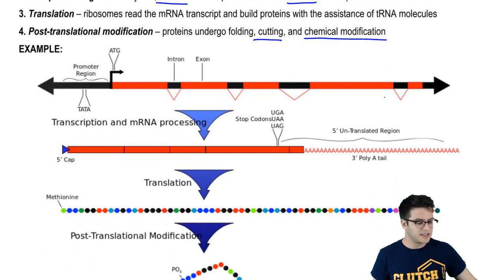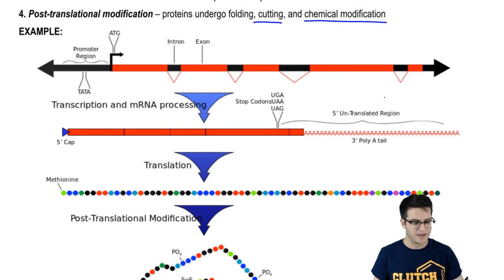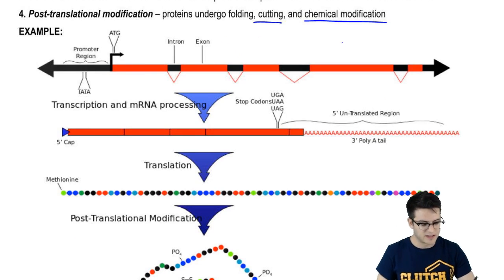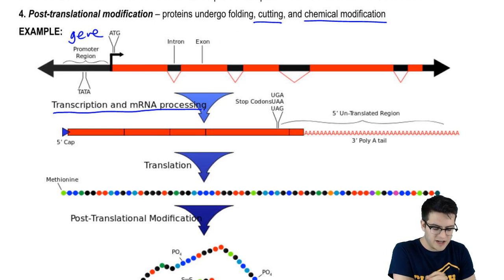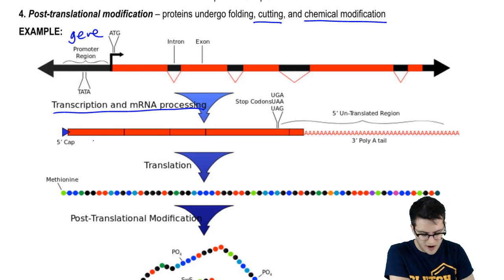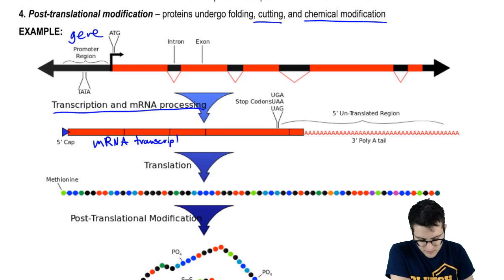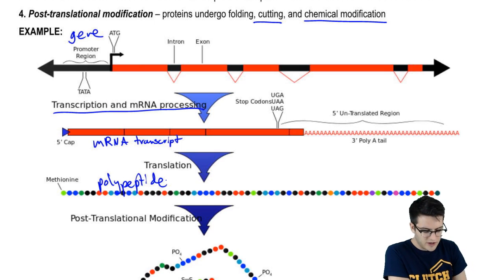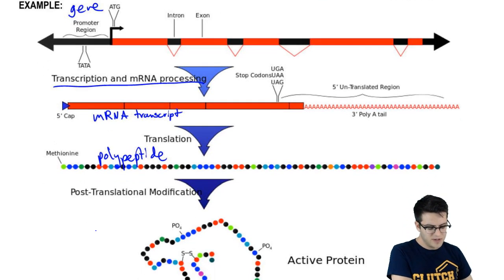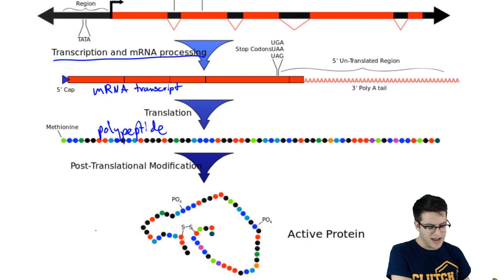Here in this image you can see this whole process mapped out. Here is our gene. We go through transcription and RNA processing, and then we have our mRNA transcript. That gets translated into a polypeptide, which undergoes post-translational modification to become that nice active protein that we see here.